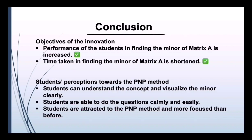In conclusion, the objective of the innovation has been achieved: students' performance in finding the minor of matrix A has increased and the time taken has been shortened. Both our objectives have been achieved. Students' perception towards the PNP method is that they can understand the concept and visualize the minor clearly. Students are able to do the questions calmly and easily, and are more attracted and focused using this easier method.